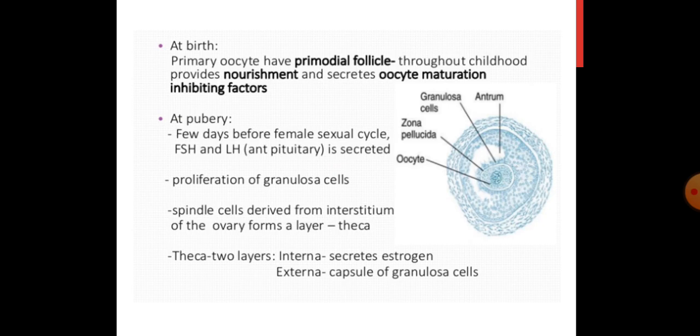At birth, primary oocytes have primordial follicles. Throughout childhood — until the first menstrual cycle starts at adolescence — the primordial follicle cells give nourishment to the oocyte, and also secrete oocyte maturation inhibiting factor, which prevents the primary oocyte from maturing further. At puberty, few days before the female sexual cycle, follicle stimulating hormone and luteinizing hormone are secreted, causing proliferation of granulosa cells around the primary oocyte.